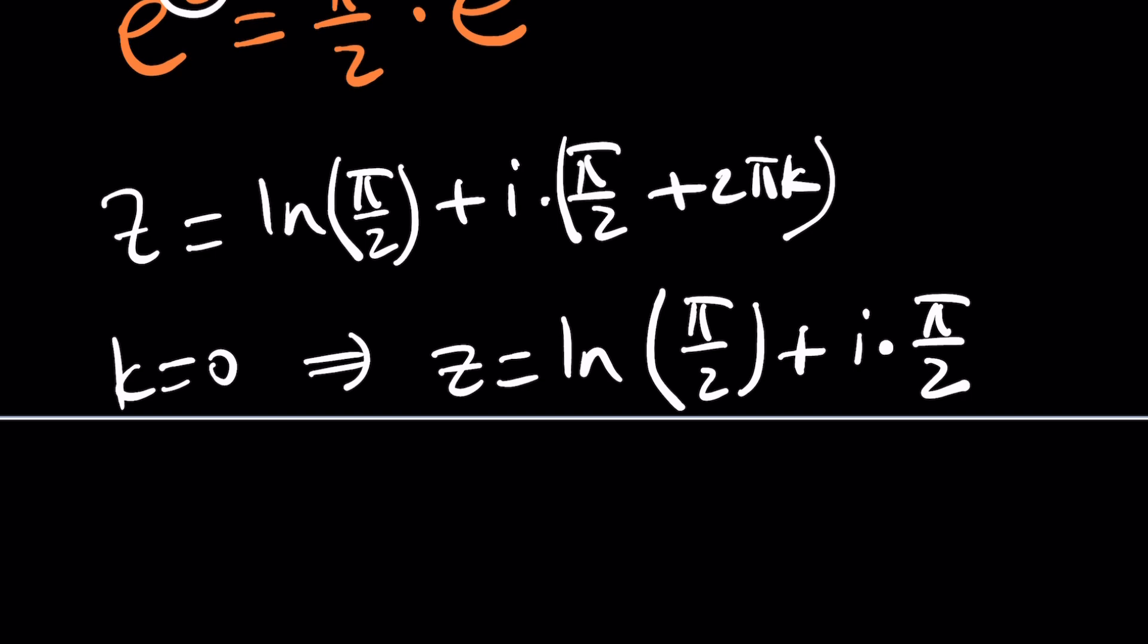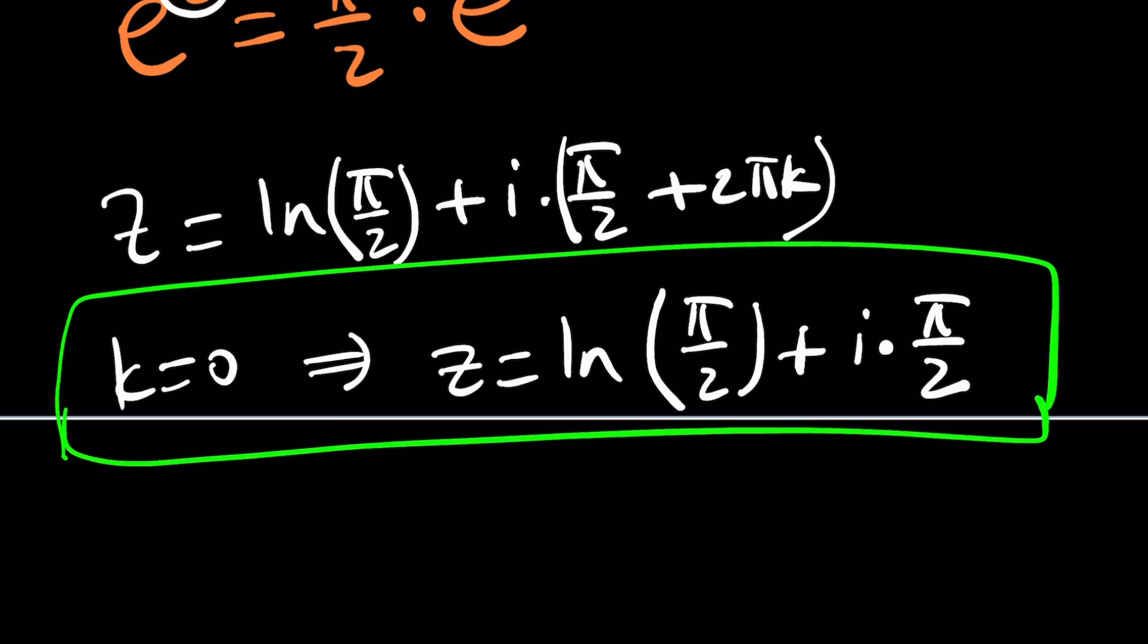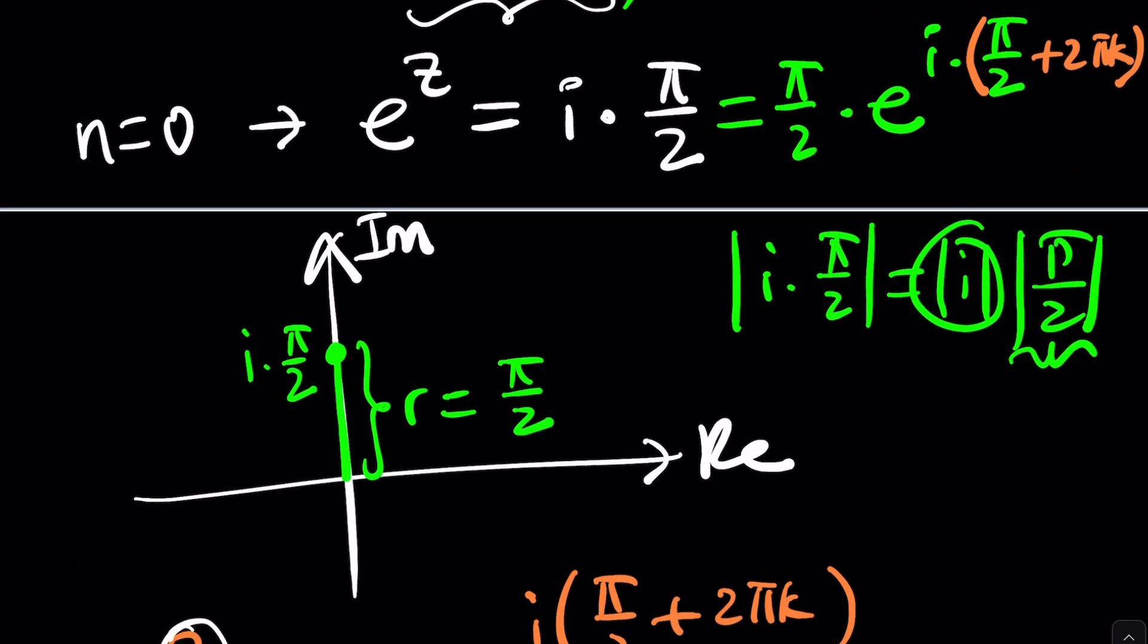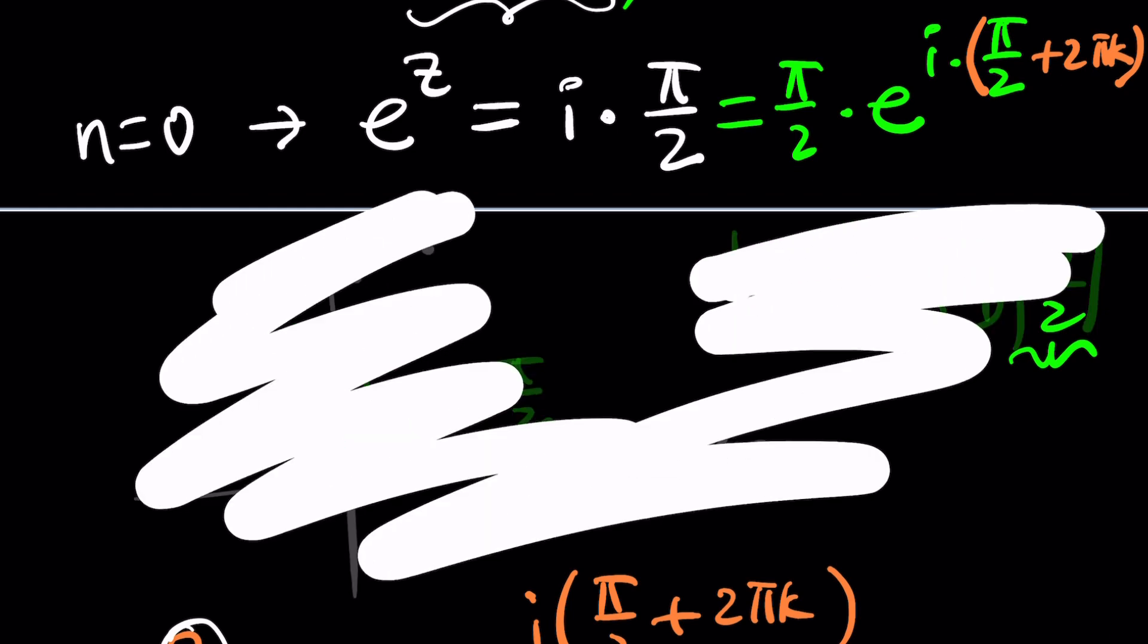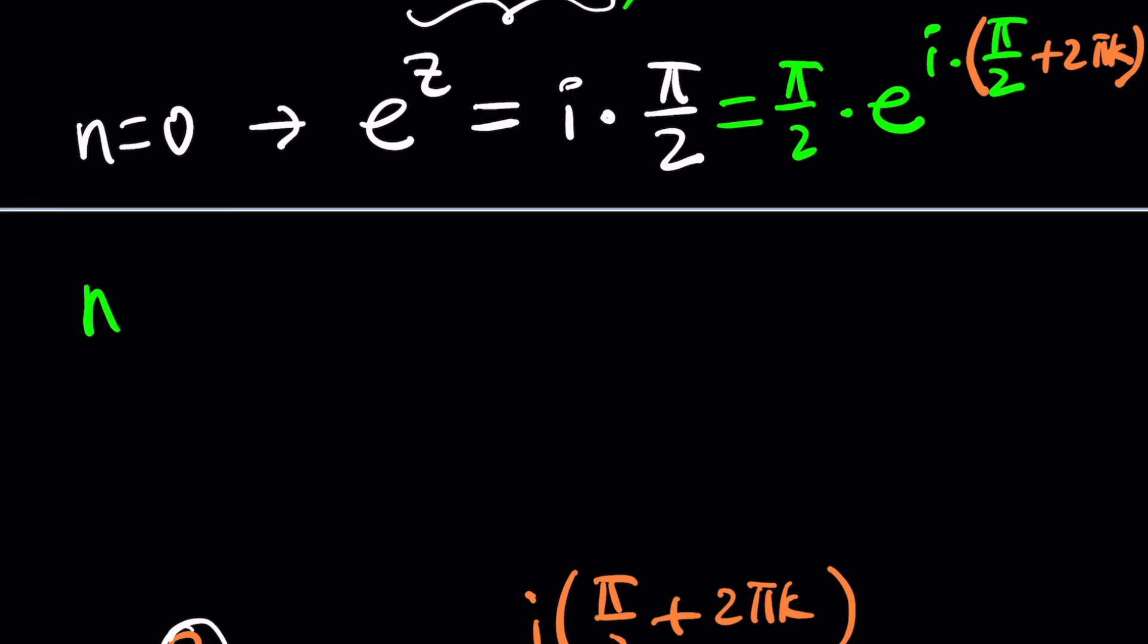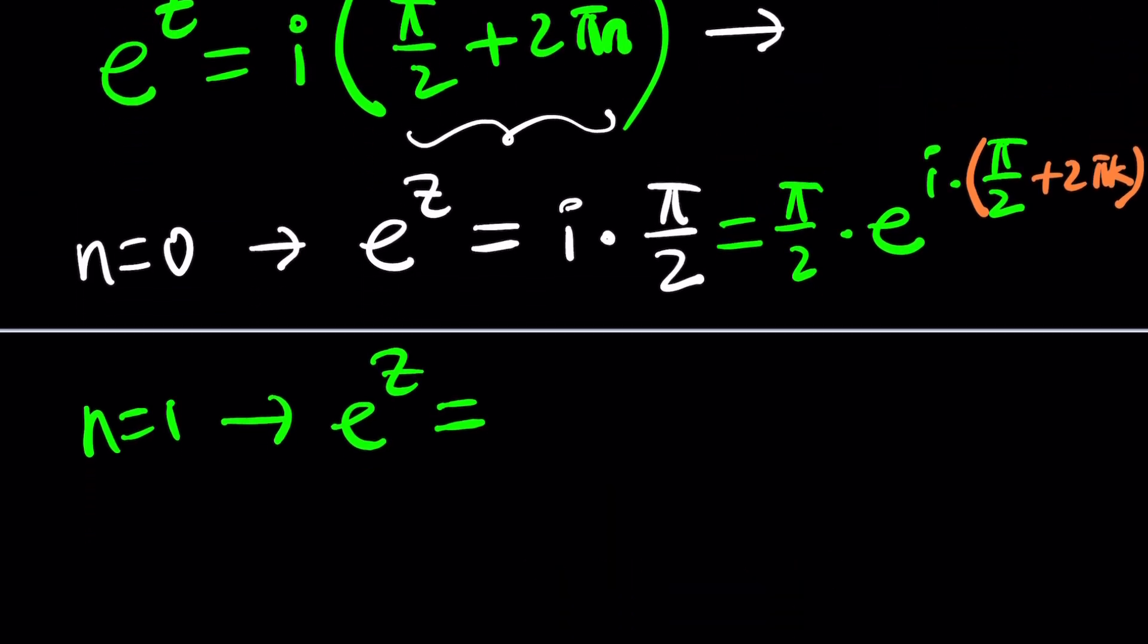Okay, so for k equals 0, this is the solution. For k equals 1, you'll get a different solution, and you can just continue. And I told you that I was going to look at the case where n is equal to 1. Let's go ahead and take a look. If n is equal to 1, we're going to get e to the z equals i times (π/2 + 2π), and that would give you 5π over 2. Awesome. And what does that mean?